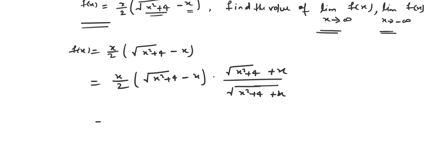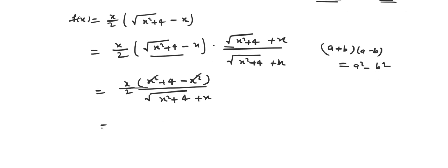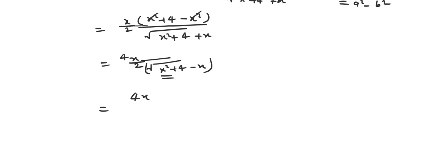Now when we do this, we use the identity (a + b)(a - b) = a² - b². So the numerator becomes x squared plus 4 minus x squared, which simplifies, and in the denominator we have root x squared plus 4 plus x. The x squared terms cancel out, leaving us with 4 in the numerator. Now let's take x squared as common, giving us 4x over 2 times the denominator.